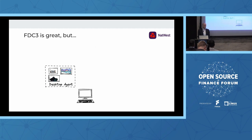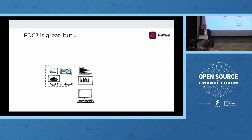Speaking from the perspective of NatWest, I think this is common to probably a lot of the big banks or large organizations. FDC3 is great, but the reality is not this simple — you don't just have one platform with one desktop agent. For us, firstly, we have a lot of applications that sit outside the desktop agent context. Our desktop application estate is huge. It's grown up over a long period of time. We have applications built in lots of different technologies — big monoliths, Java Swing applications, VB6 applications, .NET applications. We still want those applications to be able to participate in interop workflows.